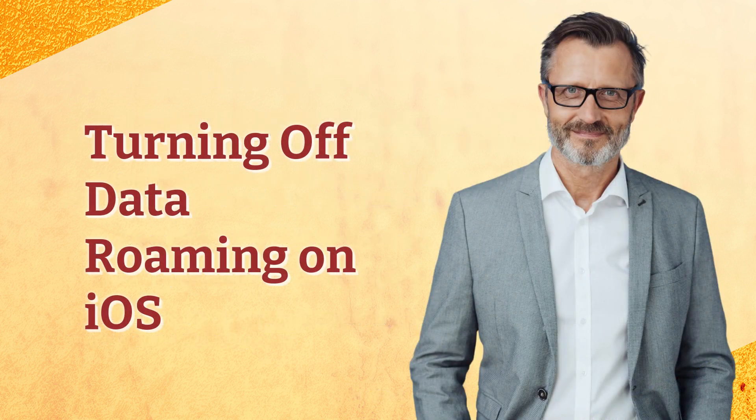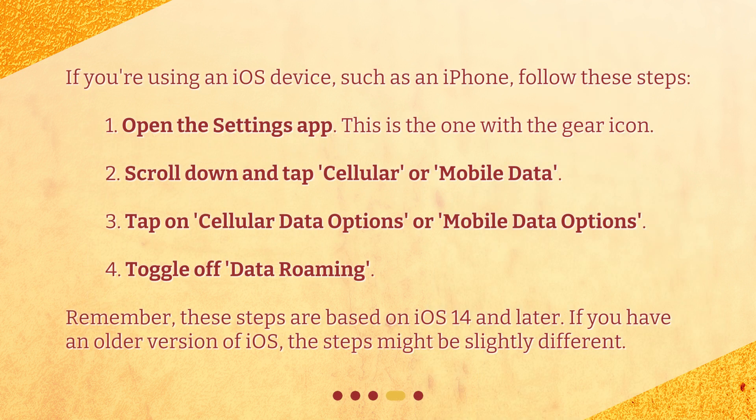Turning off data roaming on iOS. If you're using an iOS device, such as an iPhone, follow these steps. 1. Open the Settings app — this is the one with the gear icon. 2. Scroll down and tap Cellular or Mobile Data.